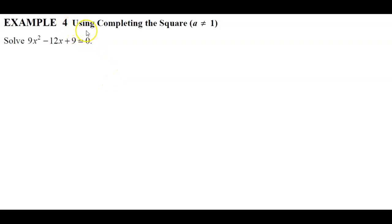Example 4: using completing the square when a does not equal 1. We have the quadratic equation 9x squared minus 12x plus 9, which is equal to 0.